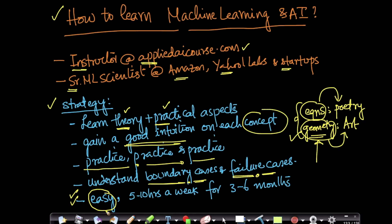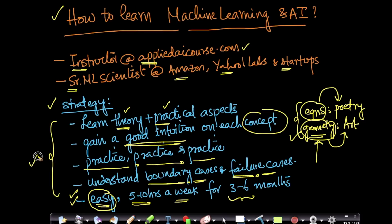I believe learning machine learning and AI is not at all hard if you are willing to put in the effort. If you can put in 5 to 10 hours of effort a week, you can learn machine learning in 3 to 6 months. On average, if you spend 10 hours a week, you can learn it in 3 to 4 months. If you put in 5 hours a week, you can learn it in 6 to 7 months, based on experience with students we have taught.